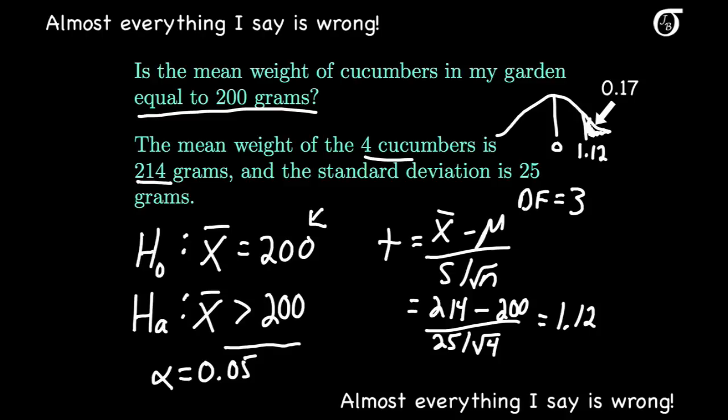The p-value is the probability of getting a sample mean that is at least as large as the observed sample mean of 214 grams. In other words, if I were to go out to my garden and get another 4 cucumbers, the probability of getting a mean weight of 214 grams or more would be 0.17. And since that p-value is greater than 0.05, we do not reject the null hypothesis. So we have pretty strong evidence that the null hypothesis is true, and that the true mean weight of cucumbers in my garden is actually 200 grams.